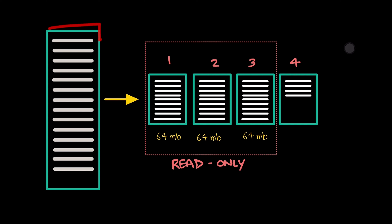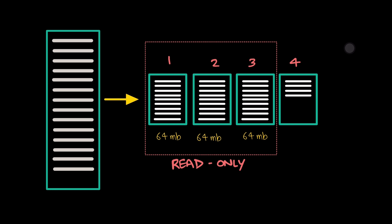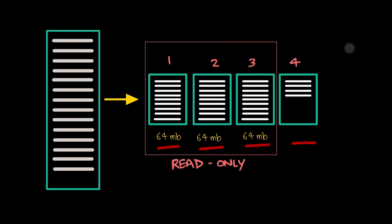Since every state change in the system is expected to be persisted into the WAL, the log file can grow to be massive in size. A large log file slows down startup and recovery processes of the WAL. To efficiently manage this, WALs employ a technique known as segmentation. In this approach, the log file is divided into smaller, more manageable segments. Each segment is allowed to grow only up to a fixed size. Once it reaches this limit, the segment is closed, and a new one is created for subsequent entries.